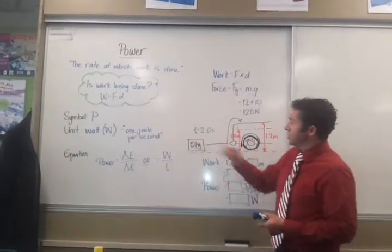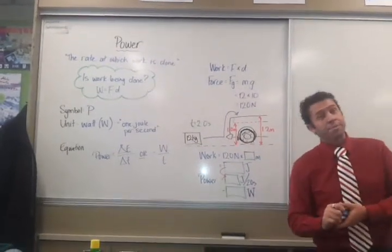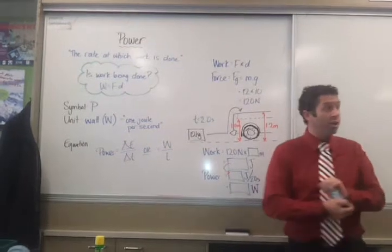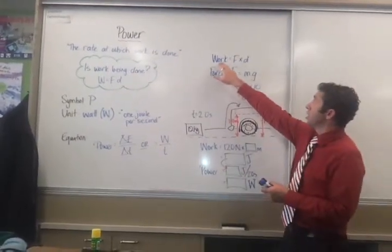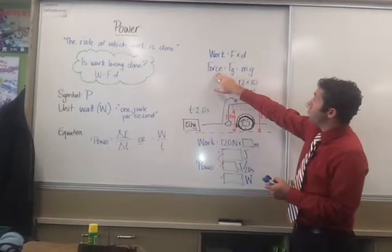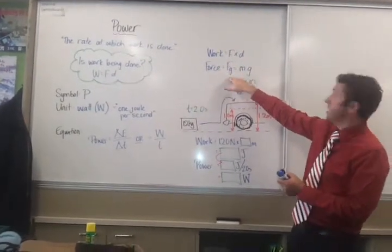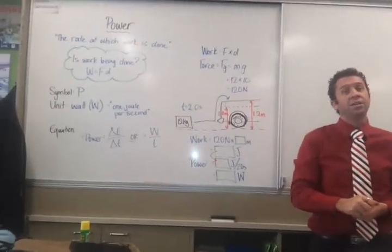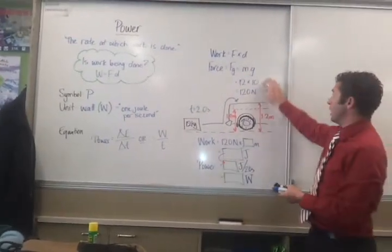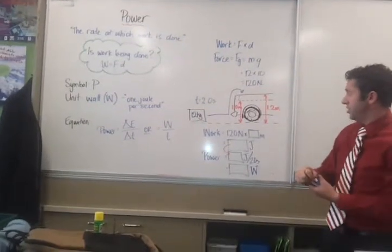Well, the first thing I need to notice is I'm only given 12 kilograms, and that's not a force, so I need to turn it into a force, I need to turn it into weight. So I'm going to go, well, if work is force times distance, my force is weight, F_g, which is the mass, 12 times gravity, and in level 1 we just use 10 metres per second squared for our gravity. So 120 newtons.